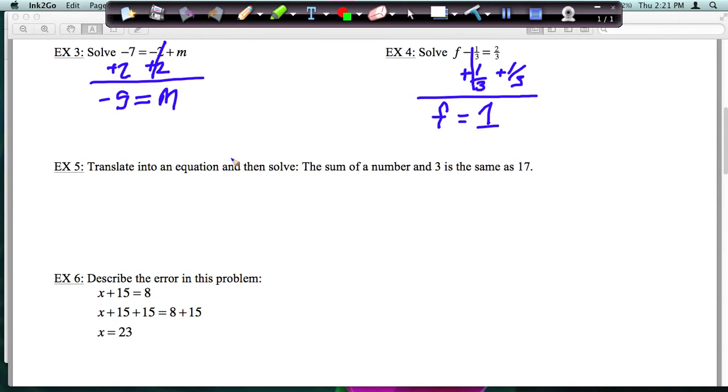Okay, example 5 says translate into an equation and then solve. So this combines some of that translation we did last time. Sum means add of a number and 3. So for that number, let's use x. So sum, add x plus 3.